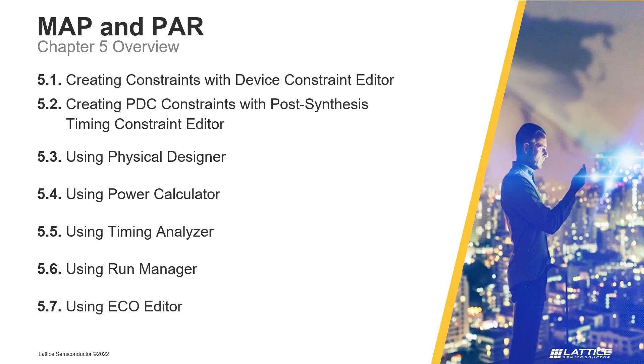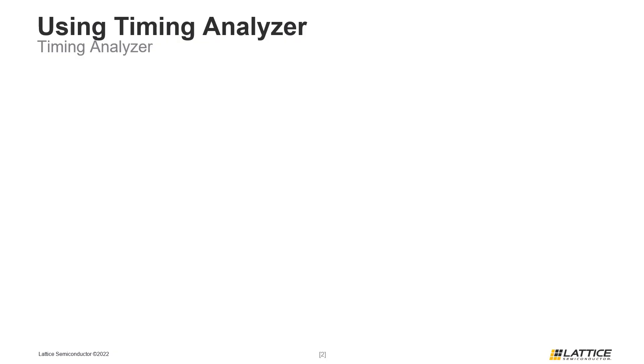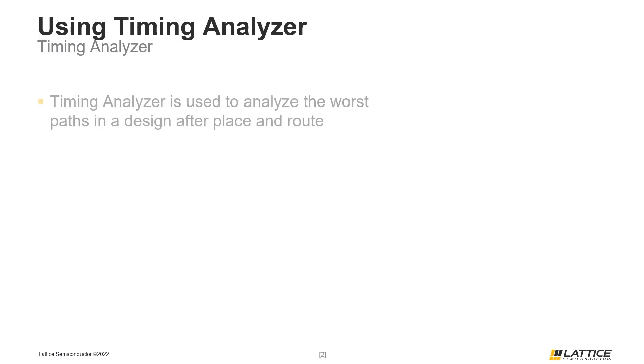Finally, in the seventh section of this chapter, we will discuss Radiant's ECO Editor tool. Chapter 5, Section 5: Using Timing Analyzer. In this section of the video series, we will be discussing Radiant's Timing Analyzer tool and how it can be used to check if a design is meeting its timing requirements after it has been placed and routed. Radiant's Timing Analyzer tool can be used to analyze the most critical paths in a project after place and route. Another useful feature of Timing Analyzer is that it can be used to cross-probe paths with Physical Designer.